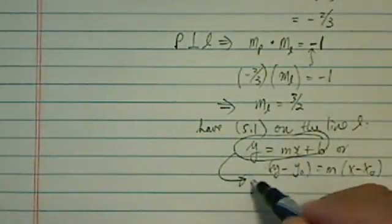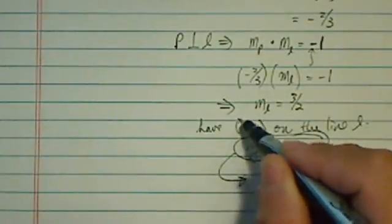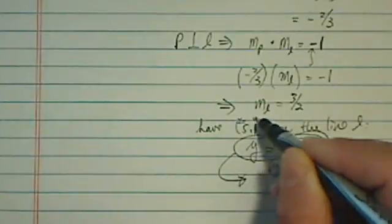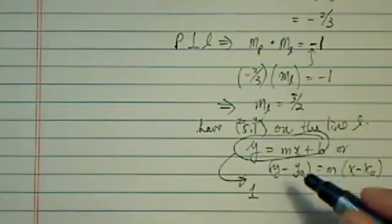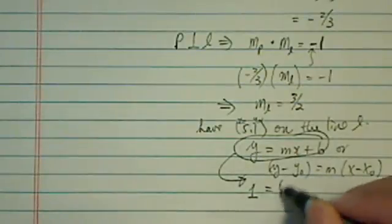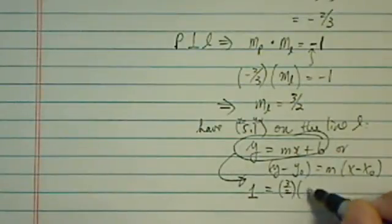So let's just use y equals mx plus b. We're given that point of 5, 1, which is saying when x equals 5, y is equal to 1. Well, let's use that. So when y equals 1 here, and I have a slope of 3 over 2, x is 5, and plus b. And from here,